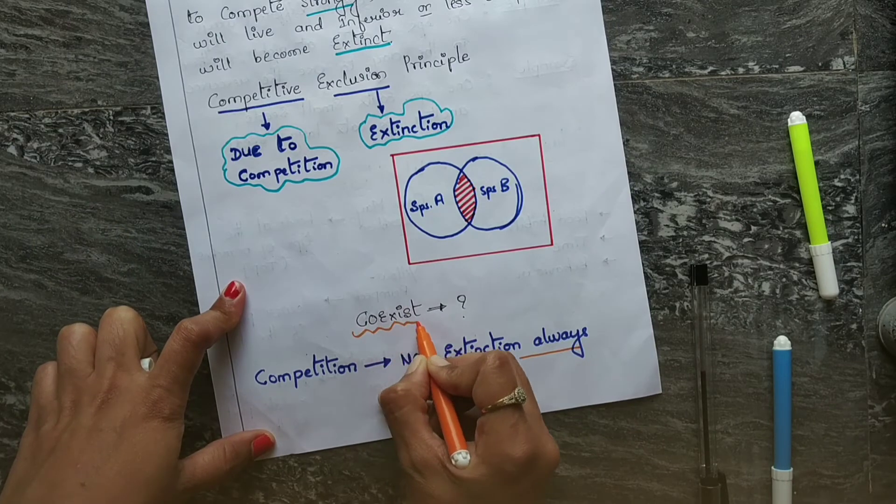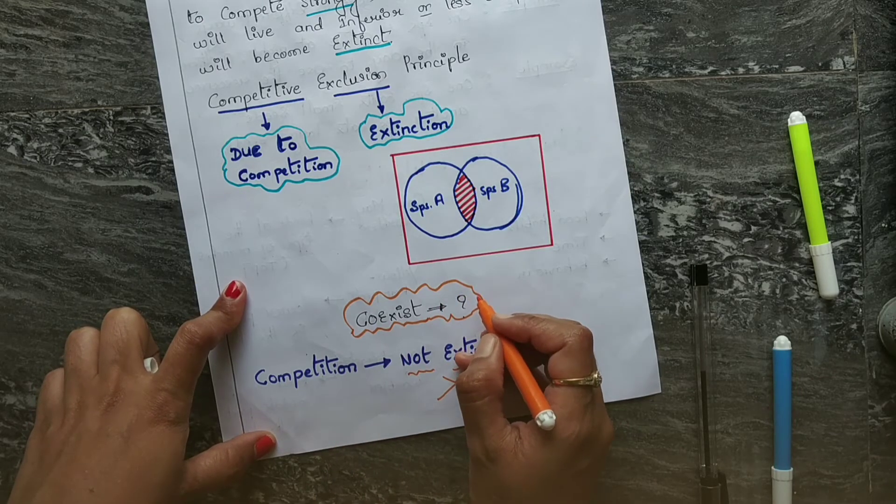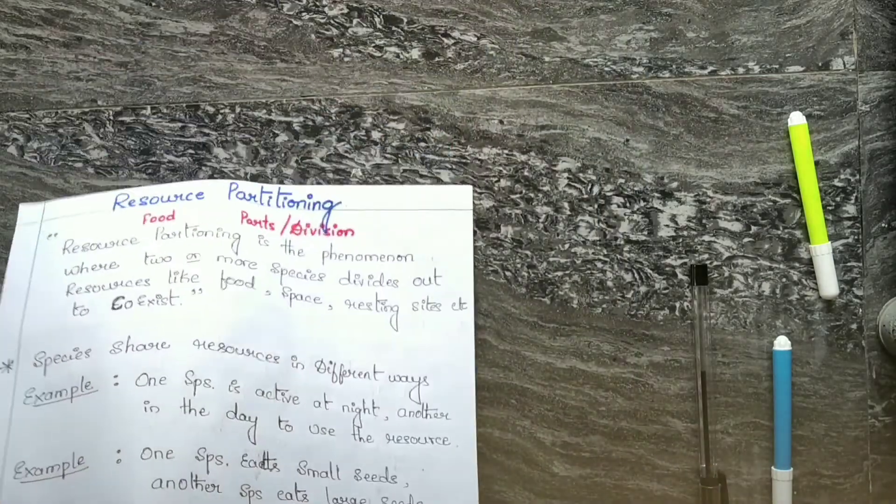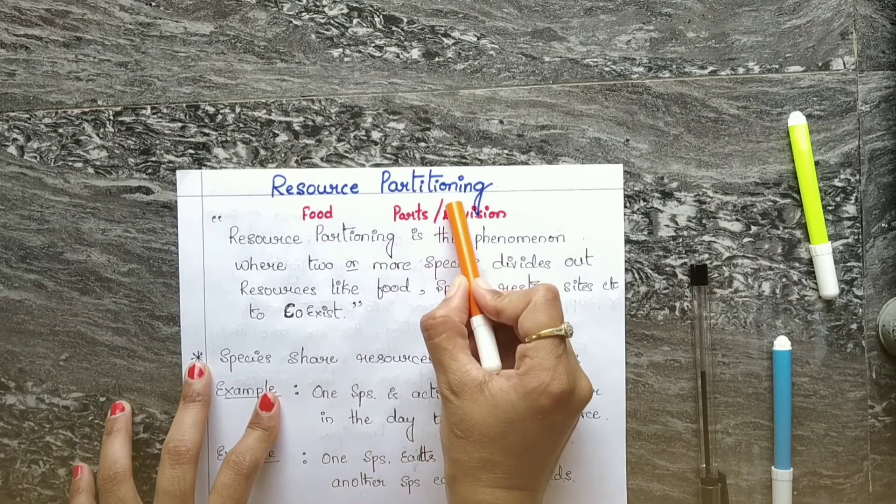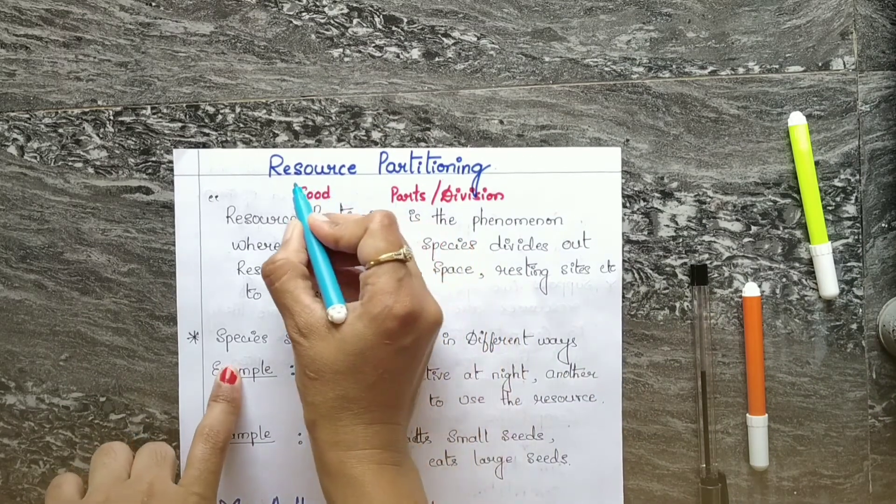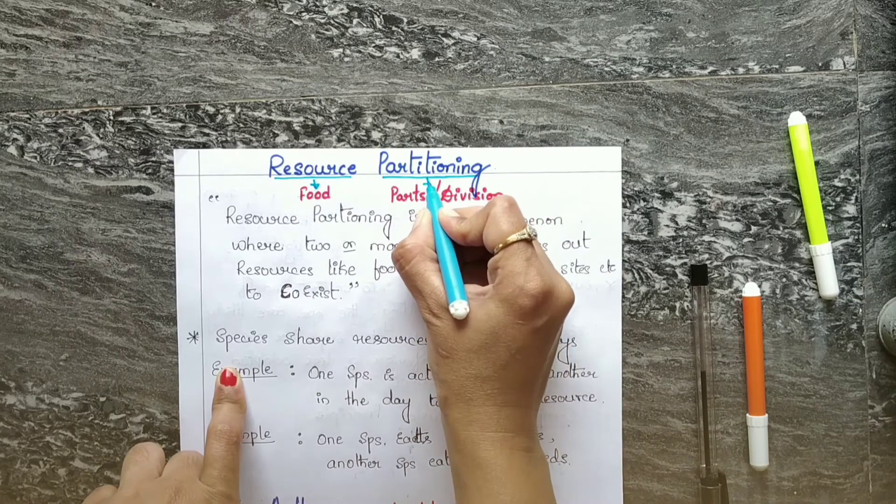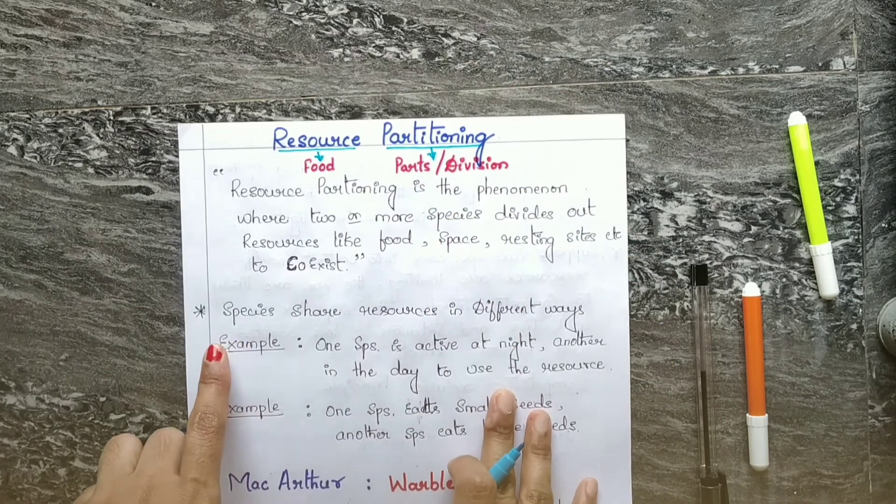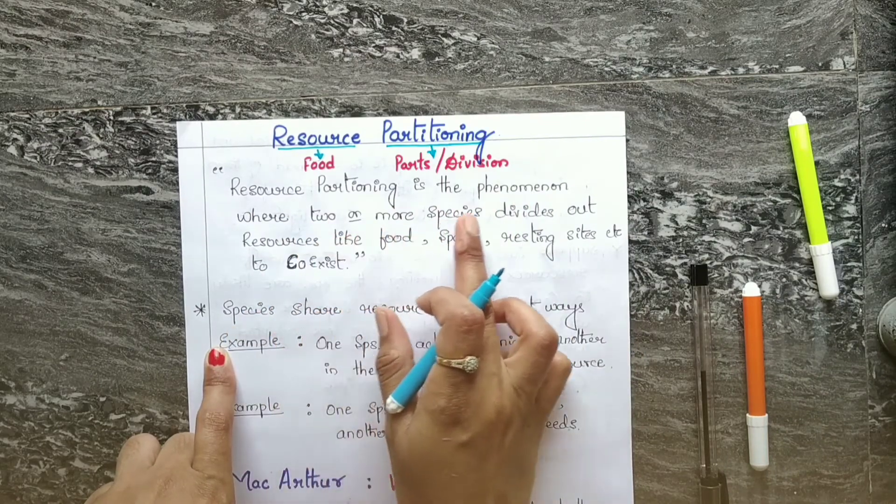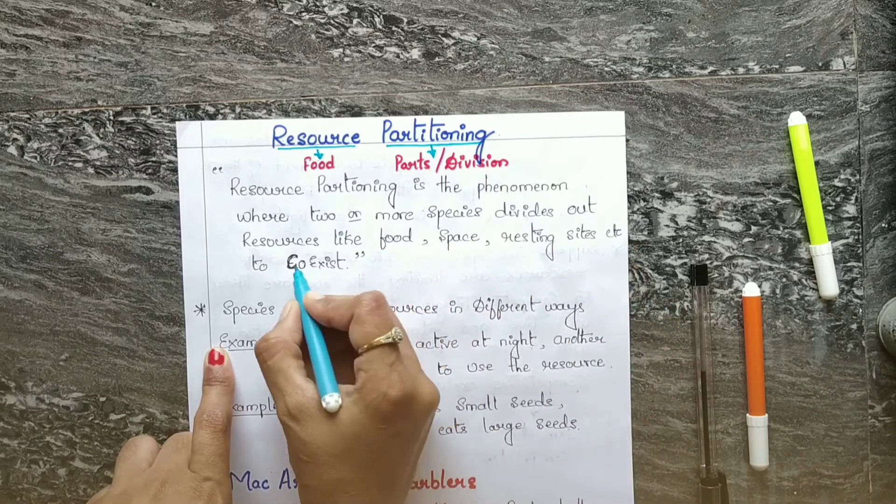There is a possibility of co-existence. Let us know how the species will co-exist, how that is possible. That could be possible by resource partitioning. To make you understand it better, as in the name itself, resource means food, and partitioning means divided. Coming to the definition, resource partitioning is the phenomenon where two or more species divide out resources like food, space, resting sites, etc., to co-exist.